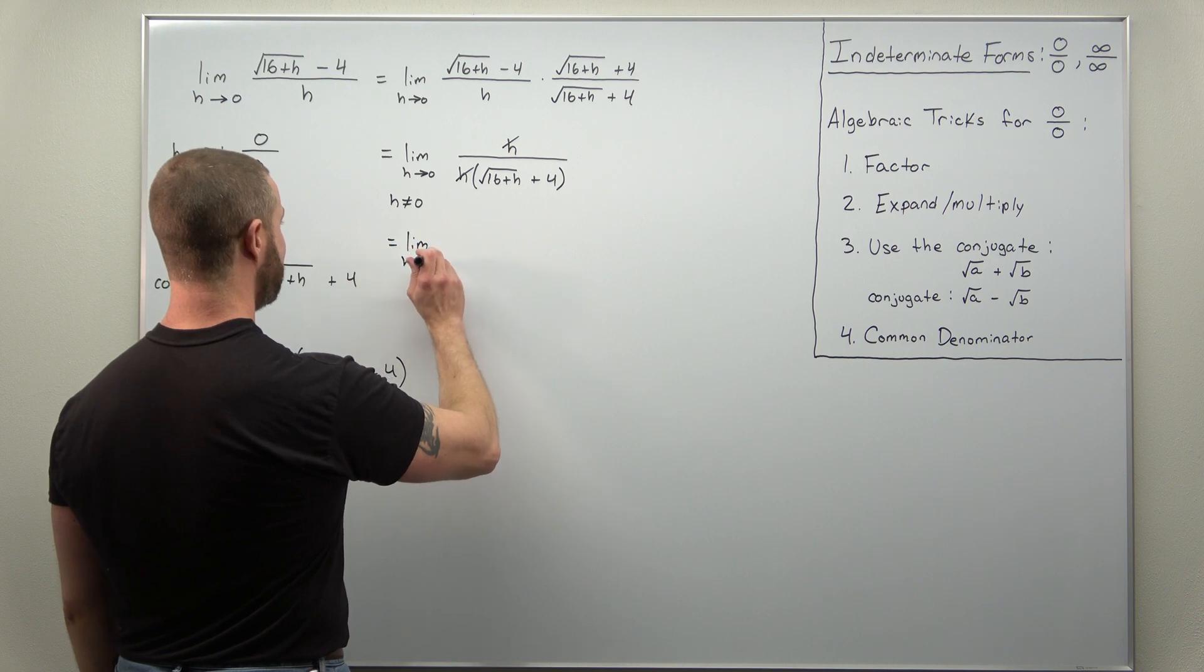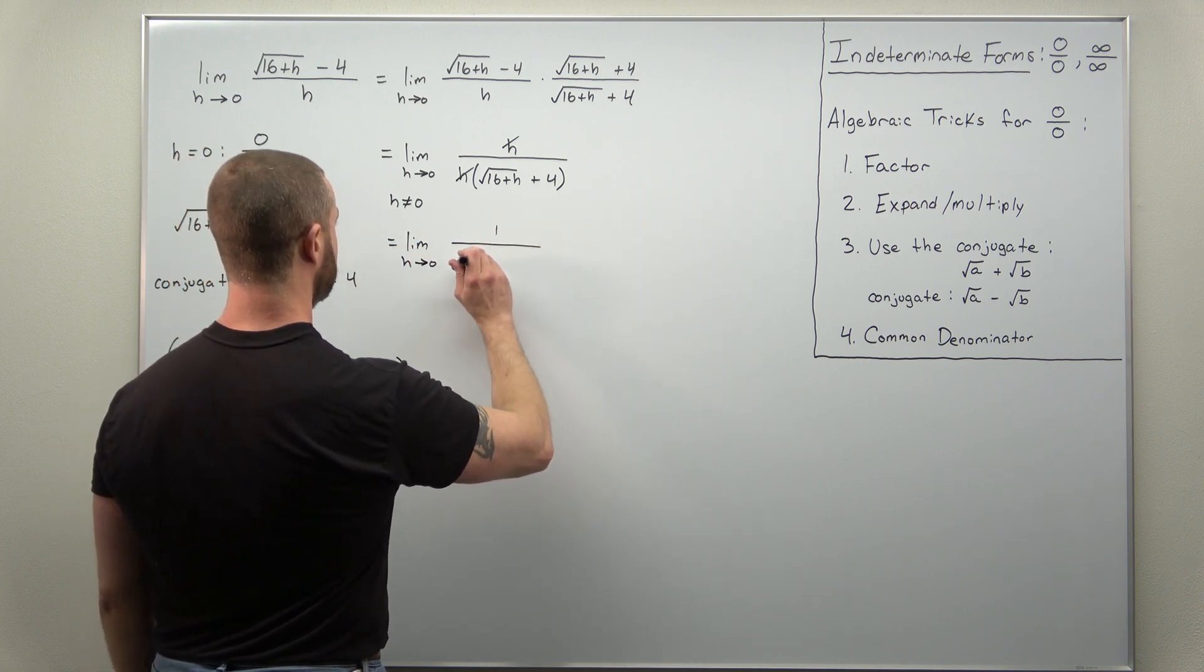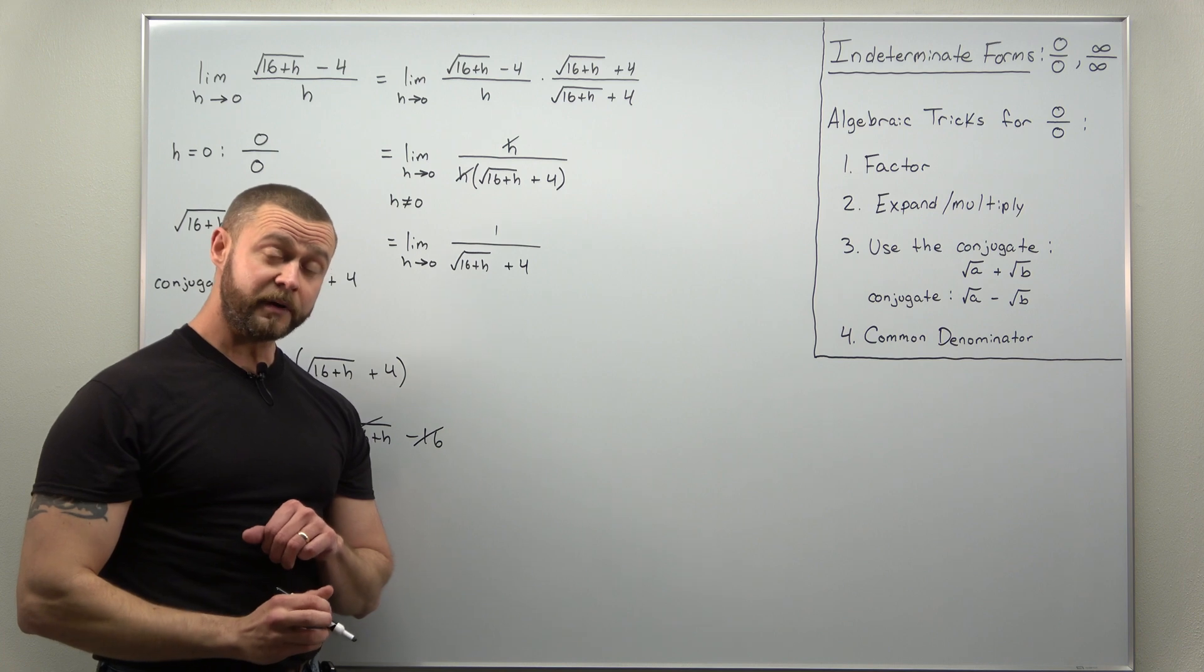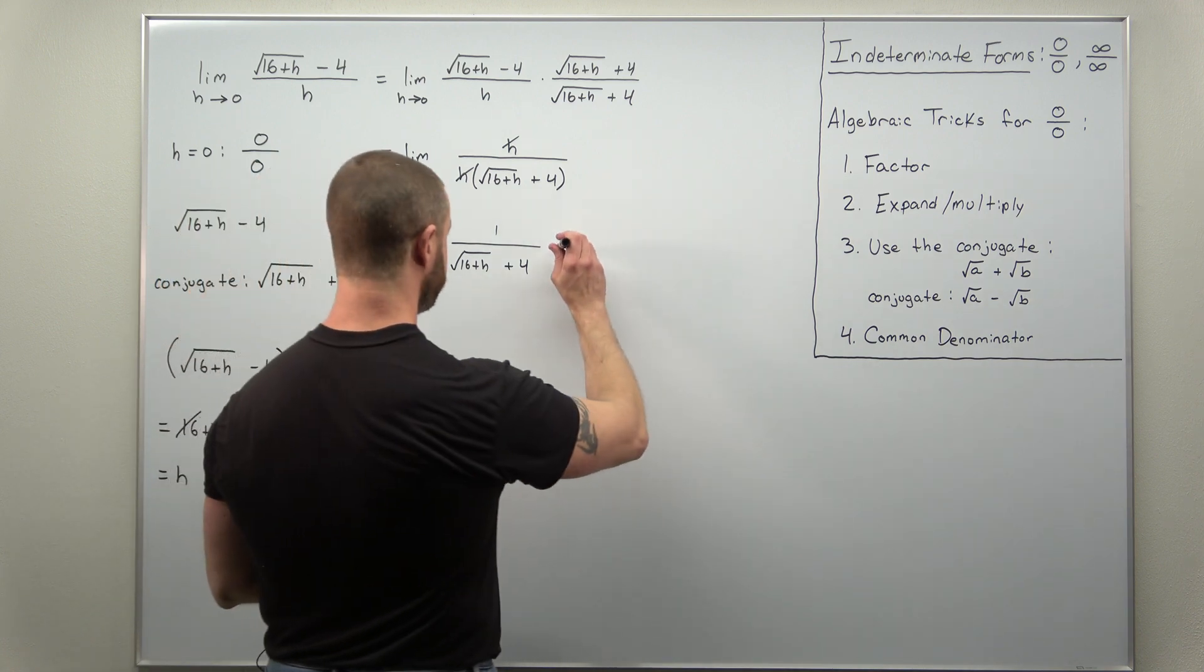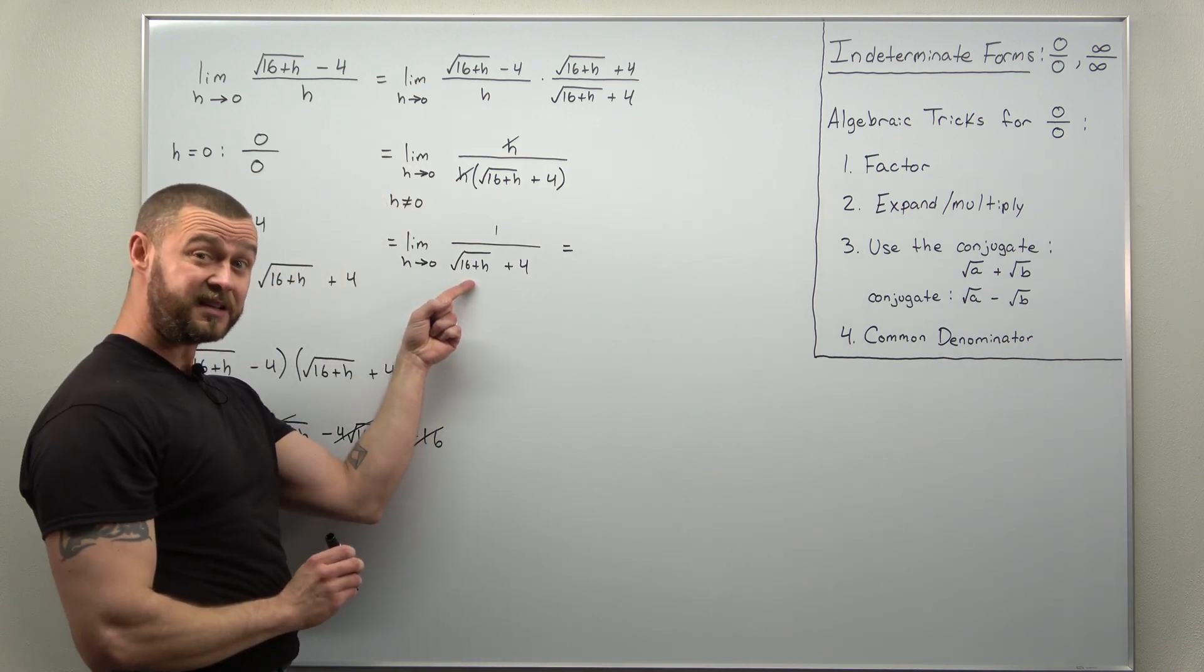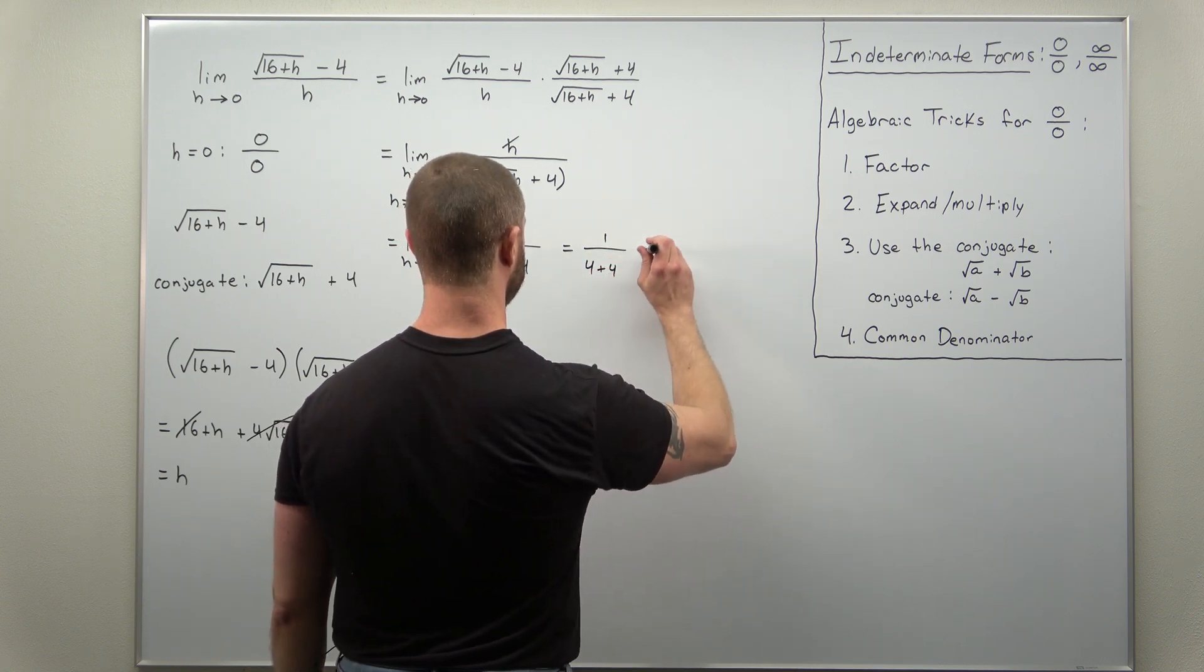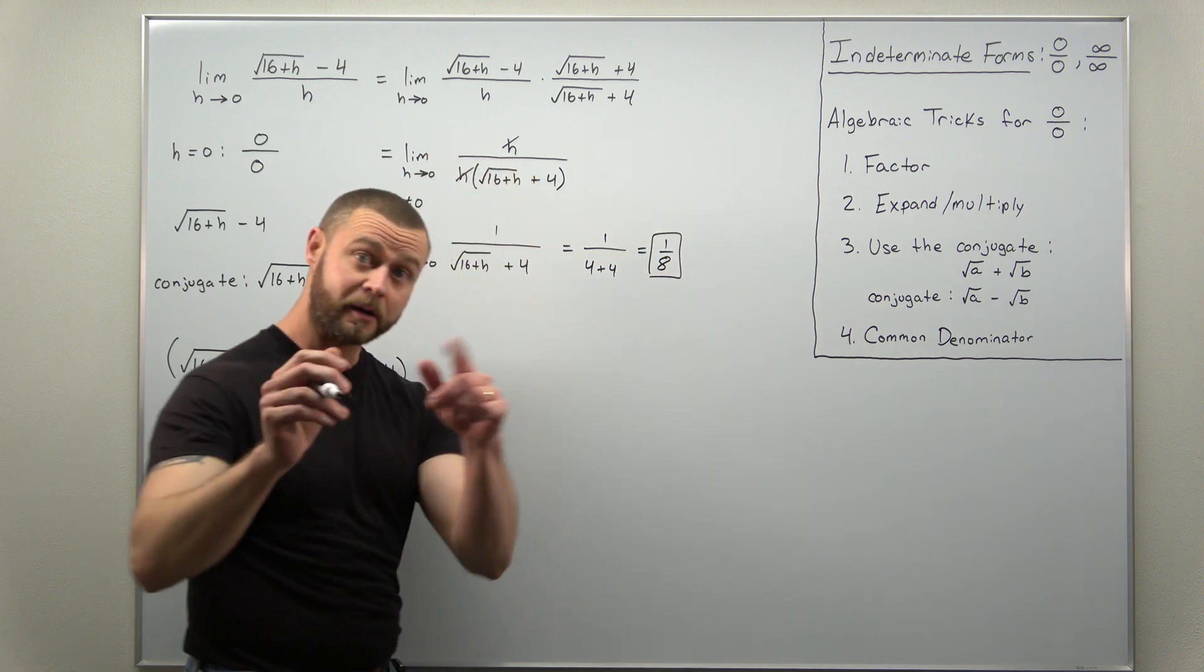And we have the limit as h approaches 0 of an expression here that has no more indeterminate form. So here, you can just plug in h as 0. And it looks like we're going to be left with the square root of 16 in that denominator, which is 4. So we get 1 over 4 plus 4. And that limit comes out to 1 eighth.